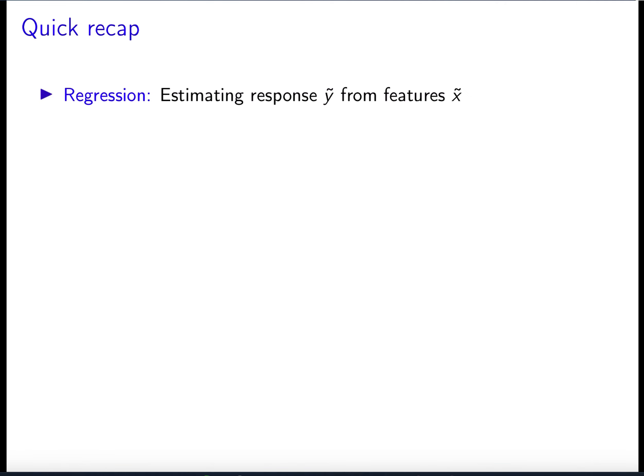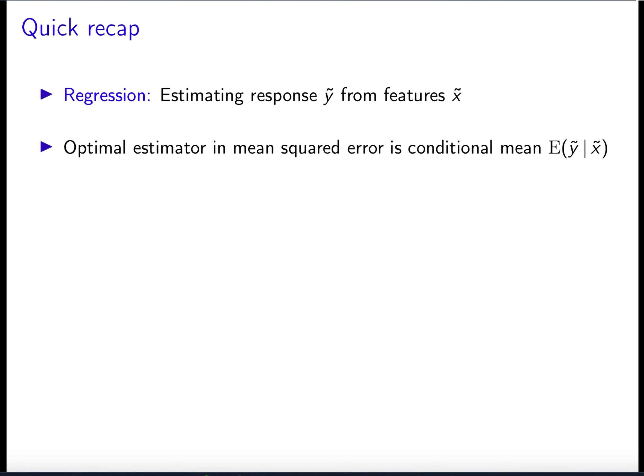I'm going to start with a quick recap of some of the stuff we learned about regression and ordinary least squares. The general problem of regression is that of estimating a response y from a fixed number of features. If we know the joint distribution between the response y modeled as a random variable and the features x modeled as a random vector, then the best thing we can do is to use the conditional mean as an estimator for y — basically, for the observed features, what is the average value of y? The problem is that the conditional mean is impossible to estimate from a finite number of data when the features are not very few.